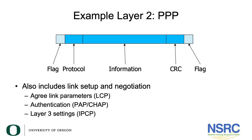Let's have a look at some examples of Layer 2. The first example is PPP — the Point-to-Point Protocol. This used to be widely used in dial-up networks but is now still very commonly used in broadband access networks like DSL networks, where your data is encapsulated inside PPP frames.